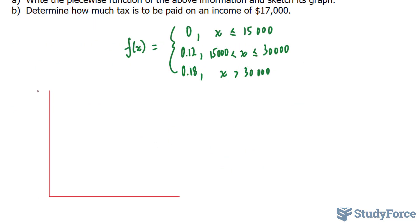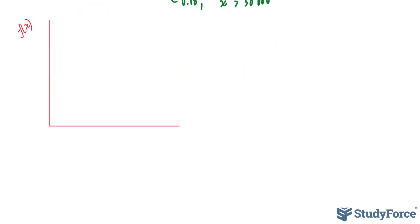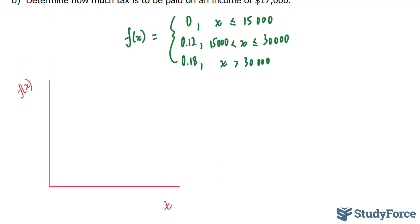So I've set up my x and y graph. This will represent my y, and this will represent my x, but instead of y, I'll use f(x). And this right here will represent my x, which is the amount that you make. And given that our x's range from $0 to $30,000, I'll use intervals of $15,000 to mark down my x.